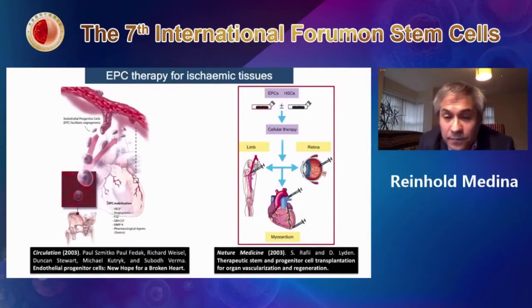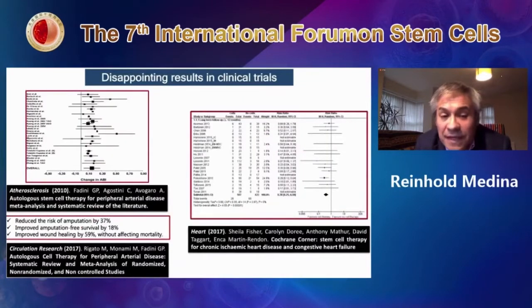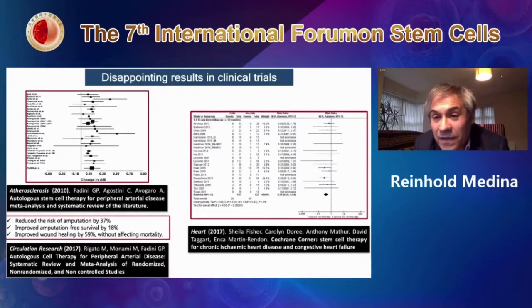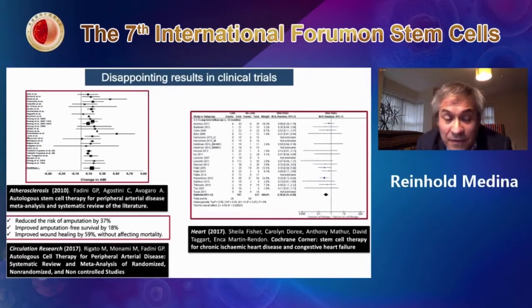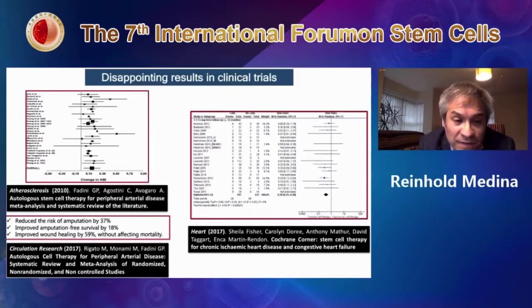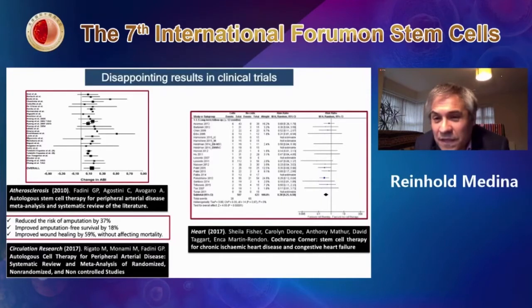Here are some meta-analyses of those clinical trials using cell therapies for ischemic limbs and ischemic hearts. The take-home message is that the therapy works, but there is great variability. Taking all the data into account, there is really a minimal benefit. In the case of the limbs, for example, the reduced risk of amputation is 37 percent — meaning roughly you have to inject four patients and hopefully one will be rescued from limb amputation. So it works, but it's really not that effective.